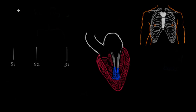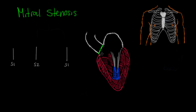The last murmur to discuss is mitral stenosis, where the mitral valve has trouble opening. Because the mitral valve is open during diastole, this is a diastolic murmur. Starting at S2 — the closing of the aortic valve — milliseconds later the mitral valve should open to fill the ventricle. Instead of a wide opening, we get a tiny restricted opening. In the beginning of diastole, the most blood flows from the left atrium into the left ventricle — this is known as rapid filling.